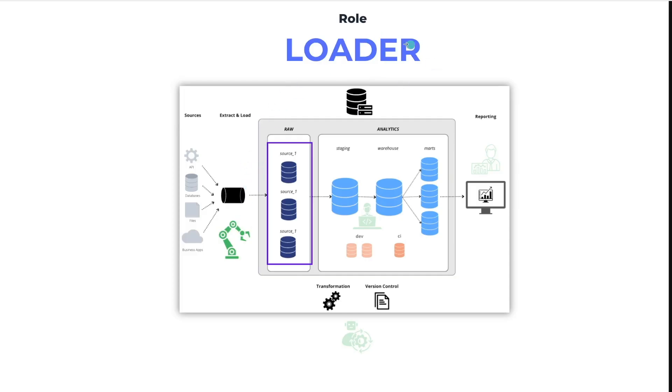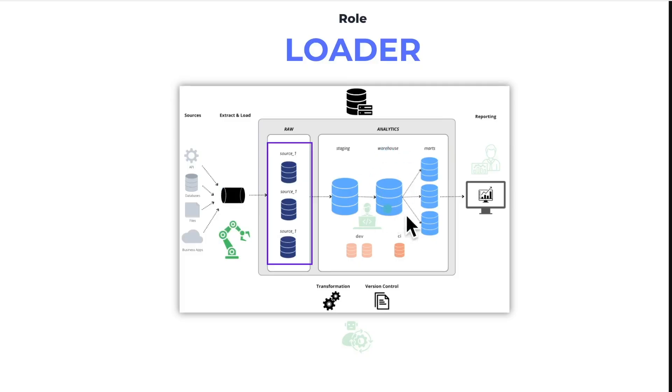For example, if everything is in a raw database or in the raw schemas, those are the only areas where you need to assign permissions to the different loading tools that you use. The approach I tend to follow is to create a single role called 'loader' as the bucket for all the permissions, with different users for each tool assigned to that overarching role. This helps you stay organized and avoids those tools from having access to anything further on in your pipeline accidentally.